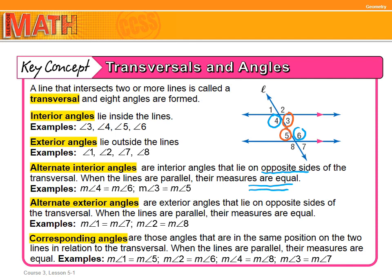Alternate exterior angles are exterior angles that lie on opposite sides of the transversal. When the lines are parallel, the measures are equal. So the measurement of angle one is equal to the measurement of angle seven, and the measurement of angle two is equal to the measurement of angle eight.